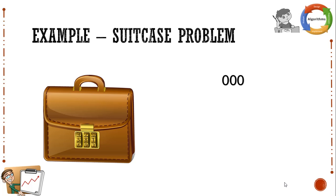We start with 000, check whether that lock is opening, then try 001, and it goes on until 998 and 999. So we have 1000 combinations in total. We keep on trying all these combinations, and whichever combination is actually the password of the suitcase will work. So we are trying all possible combinations as a password for that suitcase in the hope that out of all possible combinations, one of them will work and the suitcase will open.